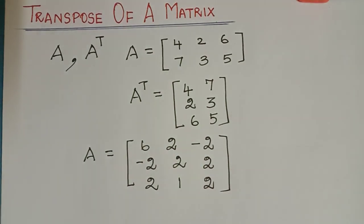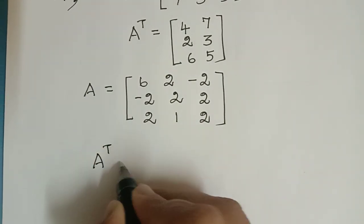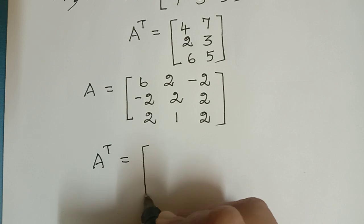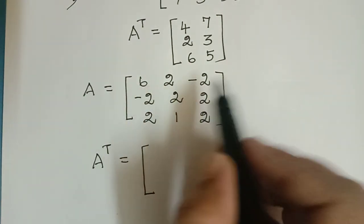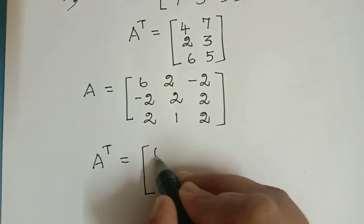The transpose of this matrix is represented as A transpose and it is equal to: The rows turn into columns. So the first row is 6, 2, minus 2, so it turns as a column.